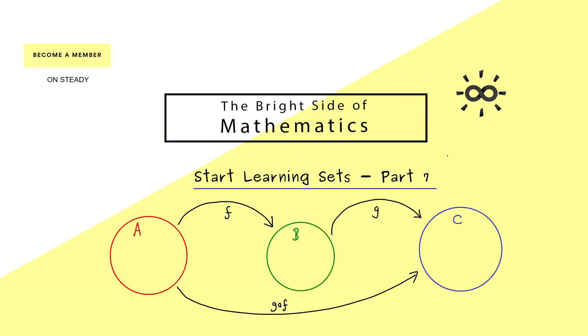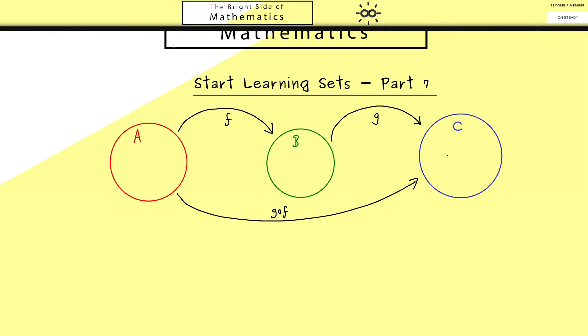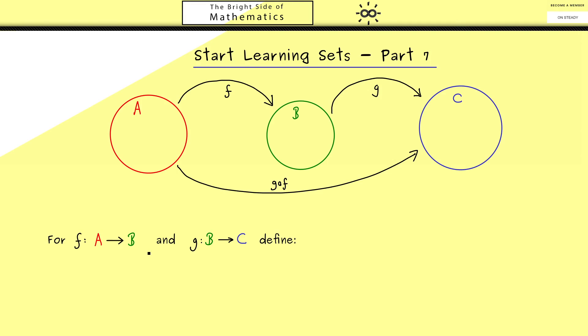So you see it's not so complicated, hence we can immediately write down the definition. The only things we need are the two maps where the co-domain of the one map is the domain of the other one.